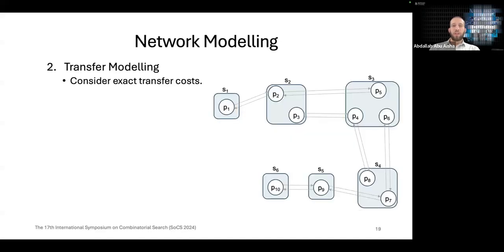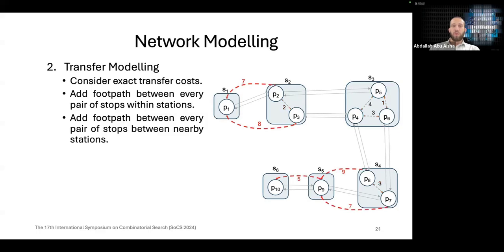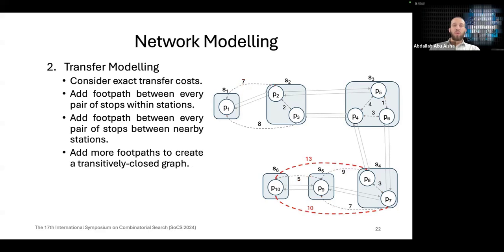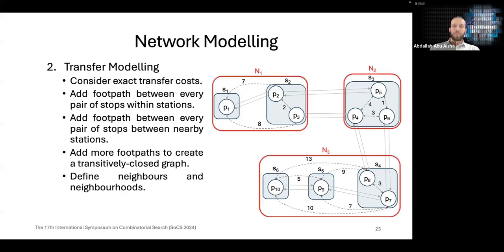For modeling transfers we consider exact transfer costs and we add footpaths between every pair of stops within stations. We also add footpaths between every pair of stops between nearby stations, and we also add more footpaths to create a transitively closed footpath graph. Based on that we can define neighborhoods and neighbors. A neighborhood in this case is a set of stations between which users can walk.